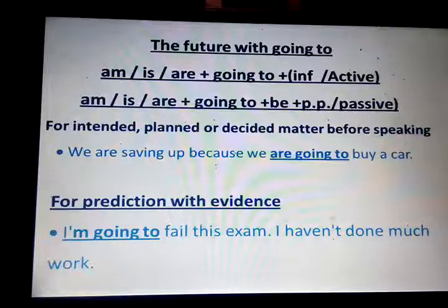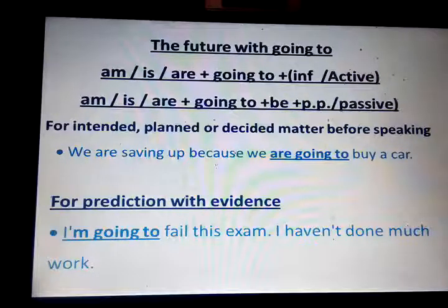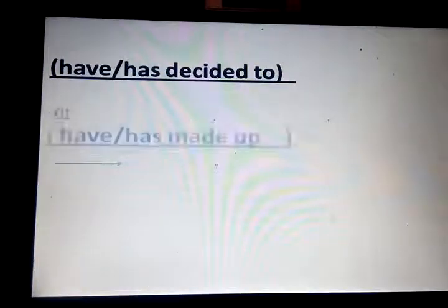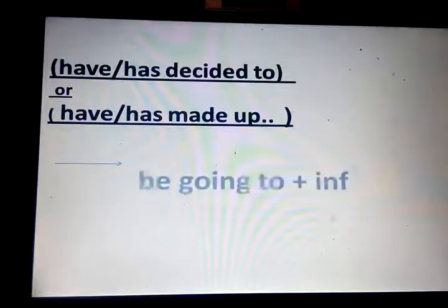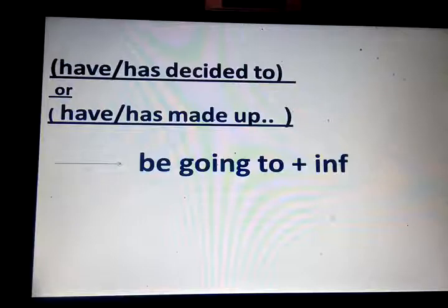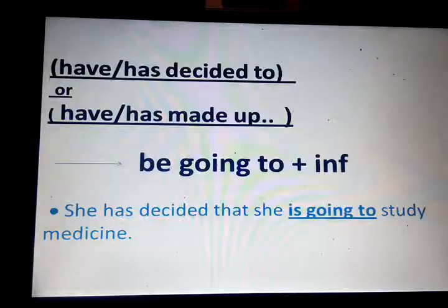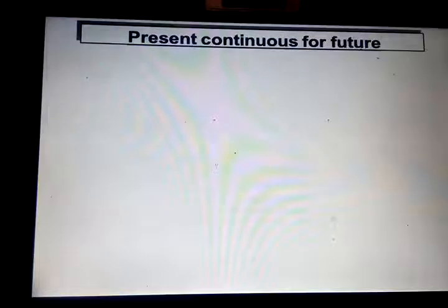I'm going to fail this exam — I haven't done much work. The reason here is: I haven't done much work, so with evidence I use going to. When someone has decided or made up his mind, I use be going to plus infinitive. Example: She has decided — she has made up her mind — that she's going to study medicine.